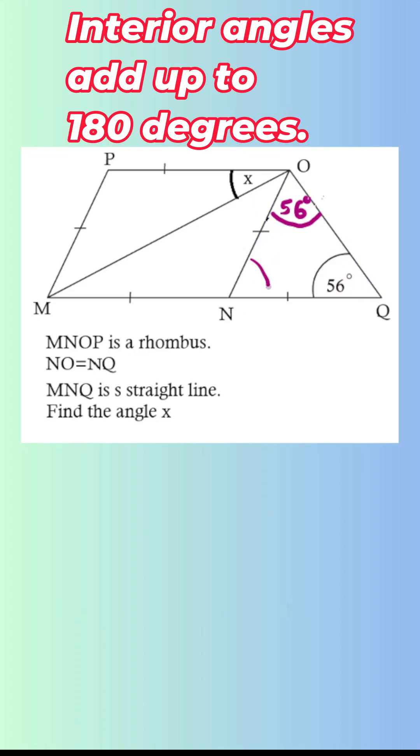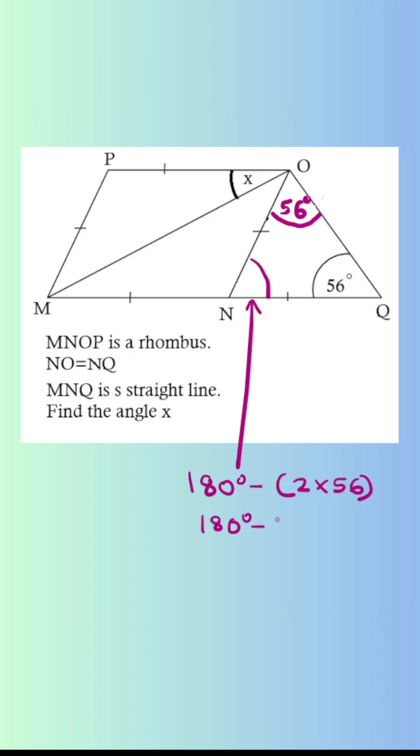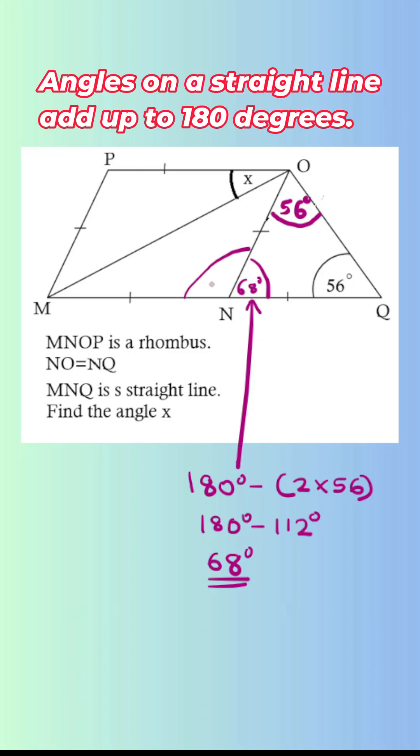So I can easily work this out. What I need to do now—we know if this one here is 68 degrees, this angle here should be 180 take away 68, because angles on a straight line add up to 180 degrees.